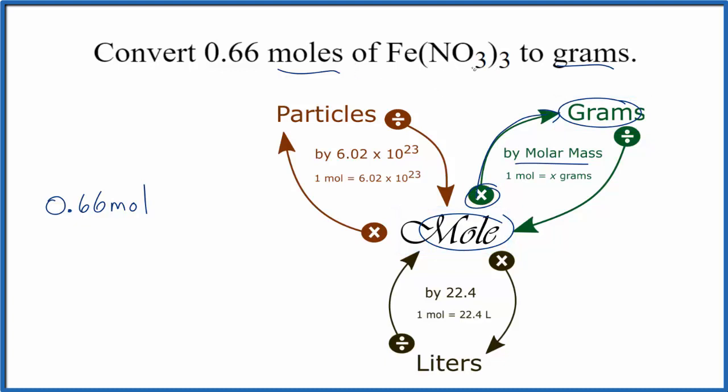We go to the periodic table, we find the masses for each element, we add those up. If you need help with that, there's a link in the description of this video for how to find the molar mass for iron(III) nitrate.